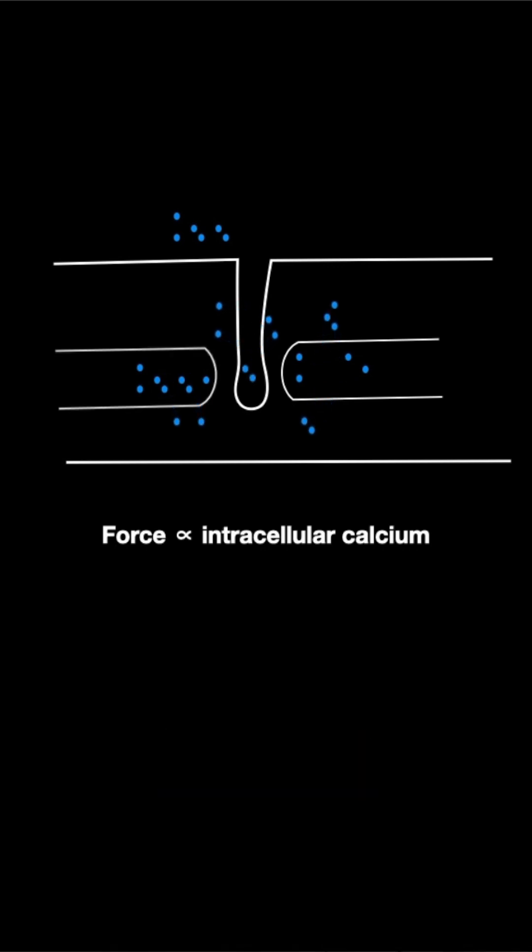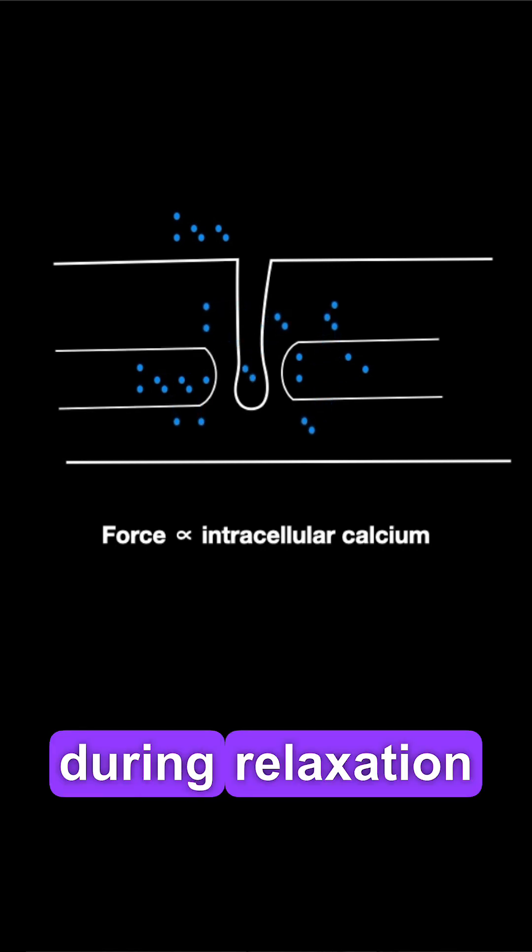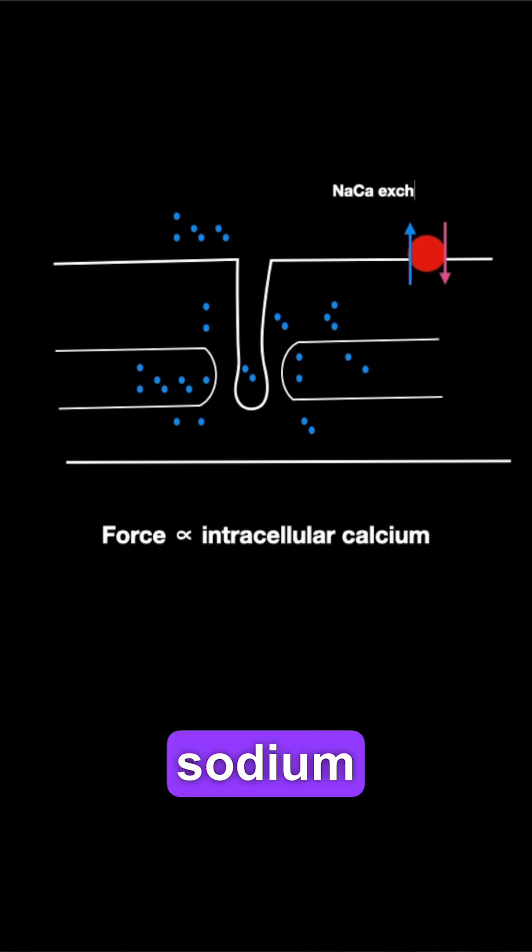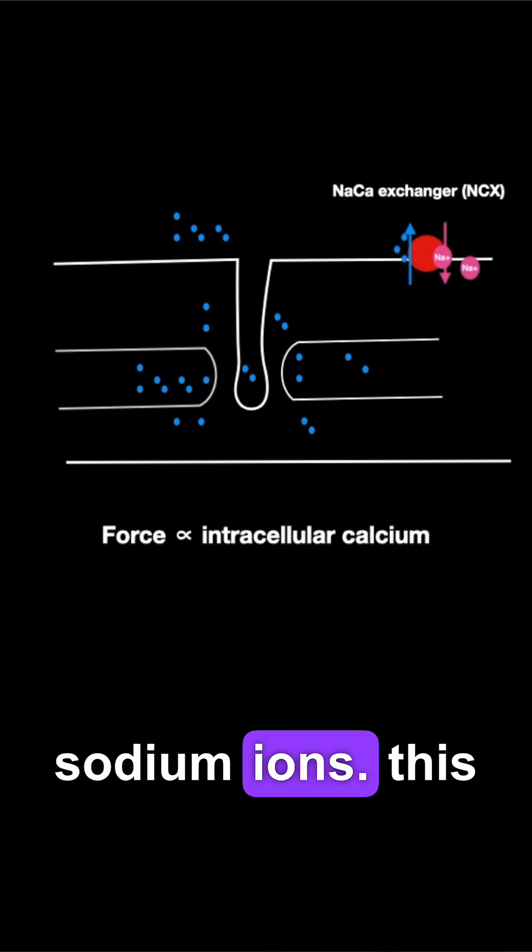In the heart, this calcium concentration is decreased during relaxation by means of sodium-calcium exchanger which pumps the calcium outside and brings in sodium ions.